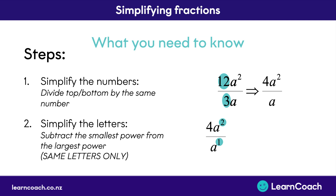Here we have 1 as the smallest power on the bottom, getting subtracted from the top power of 2. That means the bottom letter gets crossed out, and the top one is going to be 4a to the power of 2 minus 1. And 2 minus 1 equals 1, and we never need to show 1 as a power. So the final answer is simply 4a. And this is what you need to know for simplifying fractions.